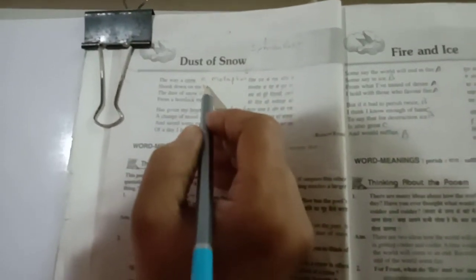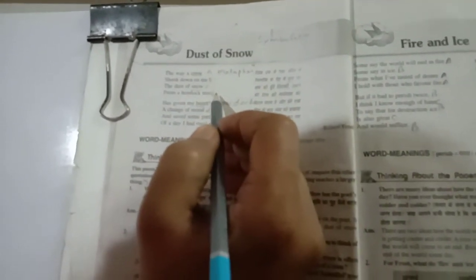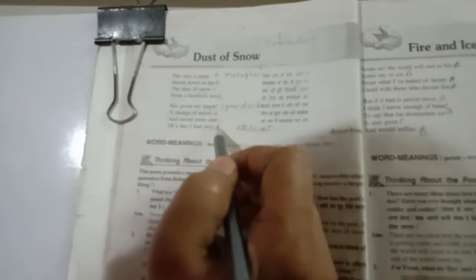The rhyming scheme of this poem is A, B, A, B, A, B, C, D, C, D.